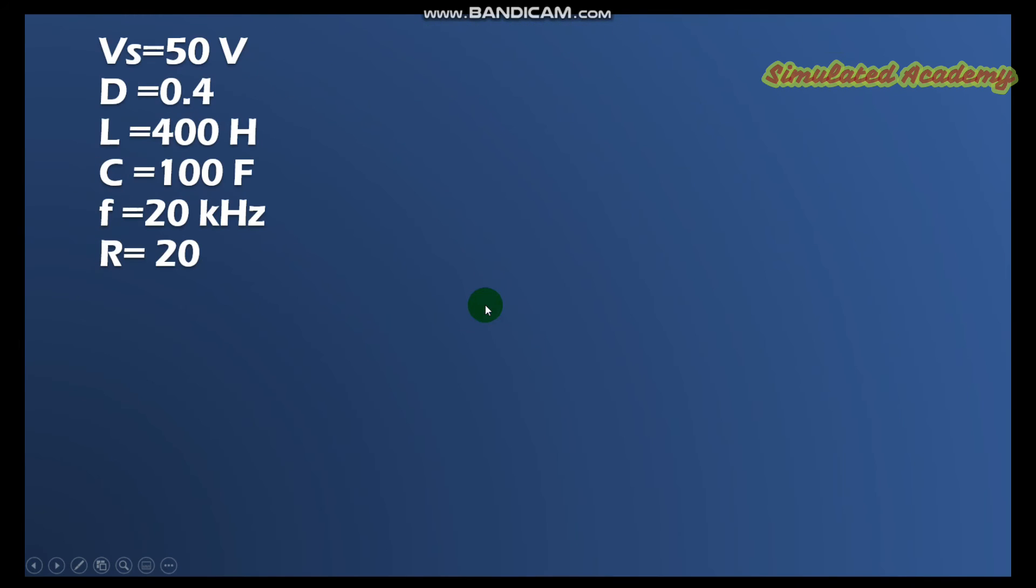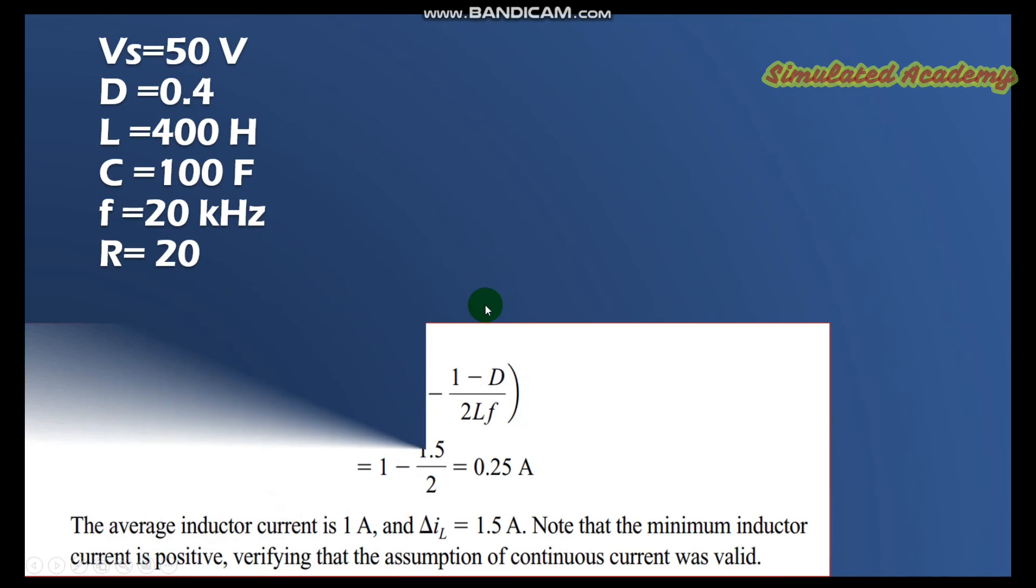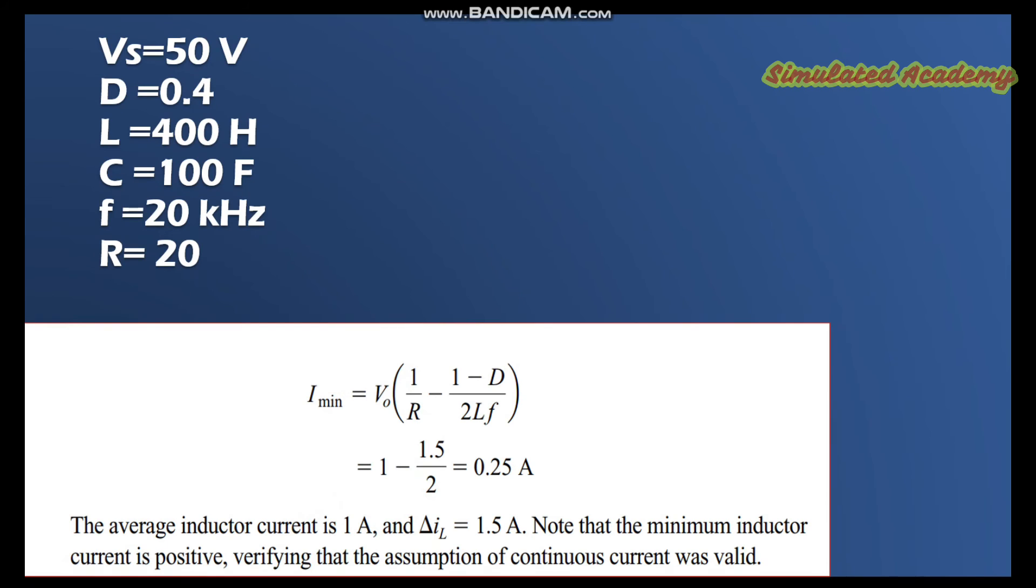Now let's find the minimum current passing through the inductor. The minimum current is the same, exactly the same formula as the maximum current, but we have just minus in this formula. So just plug all the values as it's already known.